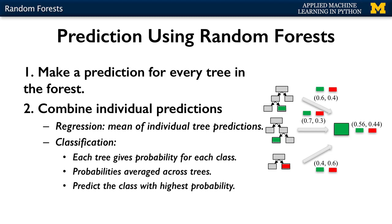Once a random forest model is trained, it predicts the target value for new instances by first making a prediction for every tree in the forest. For regression tasks, the overall prediction is typically the mean of the individual tree predictions. For classification, the overall prediction is based on a weighted vote: each tree gives a probability for each possible target class label, probabilities are averaged across all trees, and the class with the highest probability is the final predicted class.